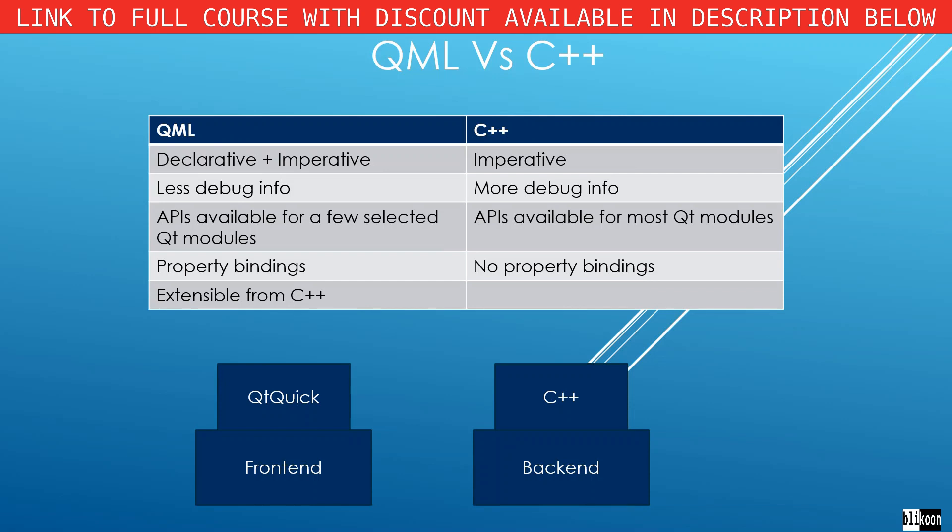QML supports property bindings — a very important feature that allows changes to propagate to other properties — and C++ doesn't support that. QML can be extended from C++. The big idea is that Qt Quick is used to build your user interface, and C++ takes care of the heavy lifting, doing resource-heavy things and passing the results back to Qt Quick to be displayed to the user.